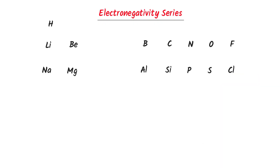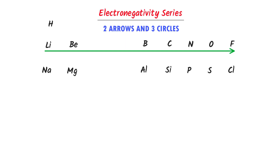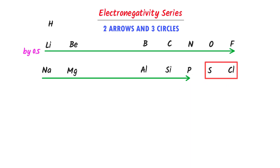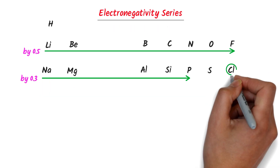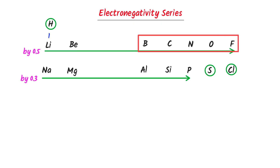I use the super easy trick of two arrows and three circles. I draw an arrow across the second period and write 'increase 0.5.' Secondly, I draw another arrow across the third period but leave the last two elements, writing 'increase by 0.3.' Lastly, I circle the three remaining elements. I write 1 here. For beryllium, I increase it by 0.6, and for the rest of the elements, I increase them all by 0.5.